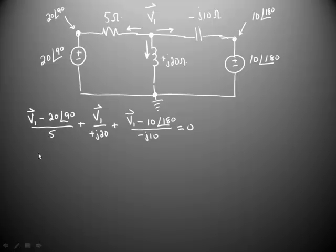On the left hand side of the equation, we're going to have one-fifth, that takes care of this term, plus one over plus J20, that takes care of this term, plus one over minus J10, that takes care of this term, and all of that is times V1 Phasor.